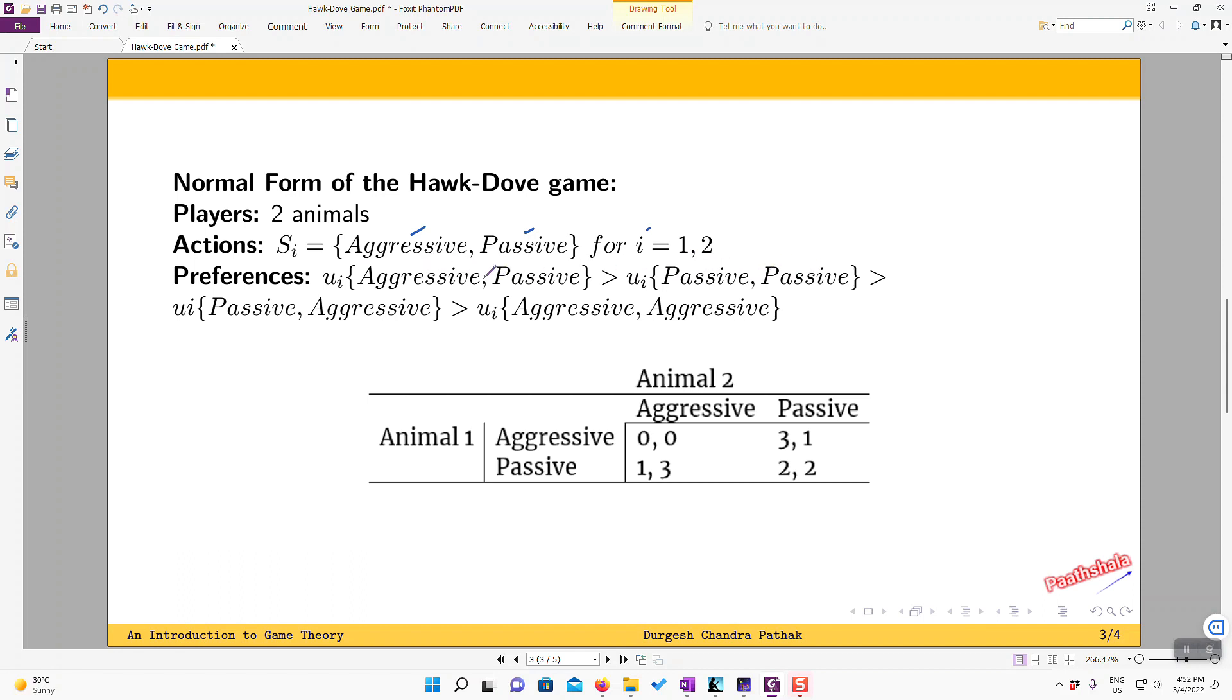So about the preferences, they are represented by their payoff function like this. So animal i prefers the outcome in which he is aggressive while the opponent is passive. He prefers this outcome over the outcome where both are passive. The next preferred outcome is where he is passive and the other animal is aggressive. And the least preferred outcome is where both are aggressive because they may end up actually attacking each other and getting harmed in the process.